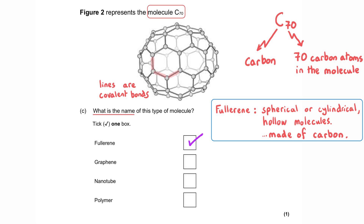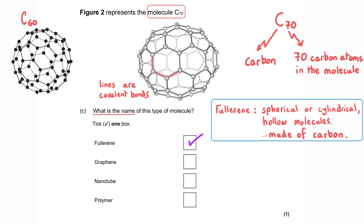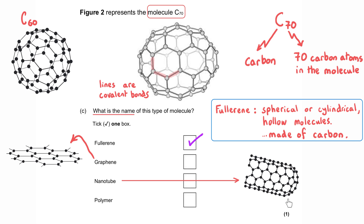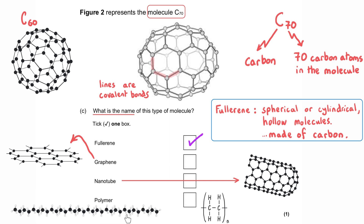C70 is not the fullerene most commonly taught — that's likely C60, or C60 Buckminster fullerene. Both are spherical hollow fullerene molecules. Graphene is a decoy — it's a giant covalent structure made of a single layer of graphite. Carbon nanotubes are hollow, cylindrical tube-like structures. Polymers are very large molecules, represented by repeat units in brackets with an N. So C70 is an example of a spherical fullerene molecule.